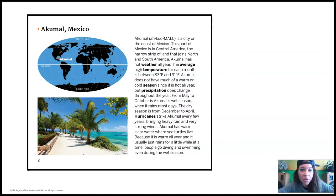Akumal is a city on the coast of Mexico. This part of Mexico is in Central America, the narrow strip of land that joins North and South America. Akumal has hot weather all year. The average high temperature for each month is between 83 degrees Fahrenheit and 91 degrees Fahrenheit. Akumal does not have much of a warm or cold season since it's hot all year. But precipitation does change throughout the year. From May to October is Akumal's wet season when it rains most days. The dry season is from December to April. Hurricanes strike Akumal every few years, bringing heavy rain and very strong winds.